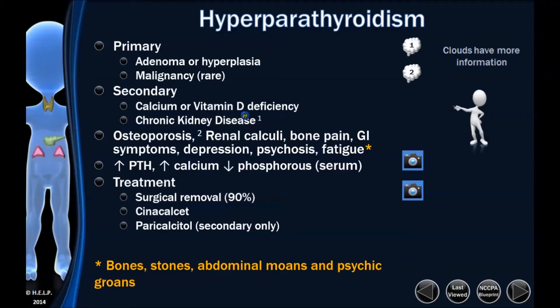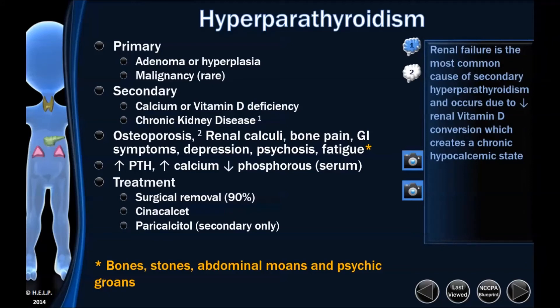We need to differentiate primary and secondary hyperparathyroidism. In hypoparathyroidism it's almost always primary due to destruction, trauma, or surgical removal. In hyperparathyroidism, it's either primary or secondary. Primary can be adenoma, hyperplasia, or malignancy (extremely rare). Secondary is the most common cause, and the most common cause of secondary hyperparathyroidism is chronic kidney disease — resulting from the body's inability to convert vitamin D, which prevents proper calcium absorption, leading to a hypocalcemic state that drives a hyperparathyroid response to raise calcium levels.